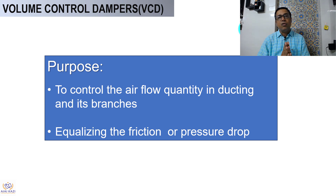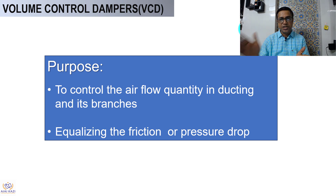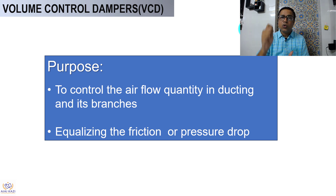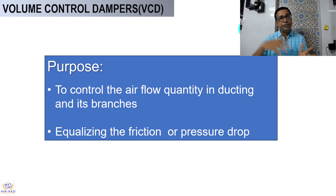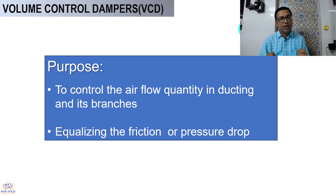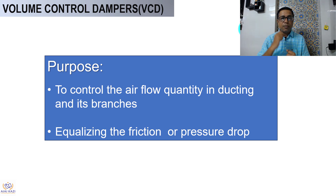The first damper we are going to talk about is the Volume Control Damper, generally called VCD. The purpose of this damper is to control the flow — the air quantity in the ducting and its branches — and also to equalize the friction and pressure drop within the duct.